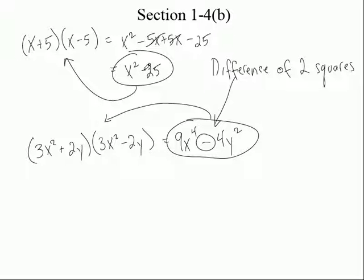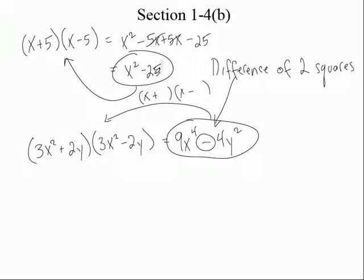So now that you know the pattern — a difference of two squares means you're going to have two parentheses. One's going to be plus and one's going to be minus. For x squared minus 25: this times this has to equal x squared, so we put x. And this times this equals 25, so a five and a five. That's how you factor it: x plus 5 times x minus 5.